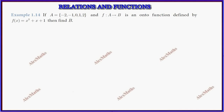Hi students, this is Alex here. Example 1.14: If A equals the elements minus 2, minus 1, 0, 1, and 2, and the function from A to B is an onto function, and the function is f(x) = x squared plus x plus 1, then find B.